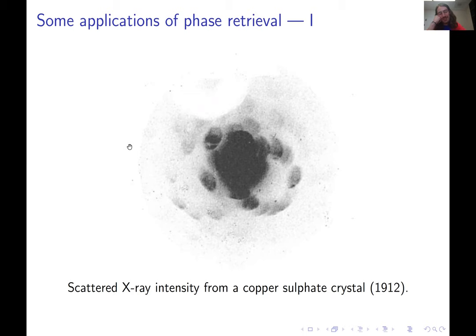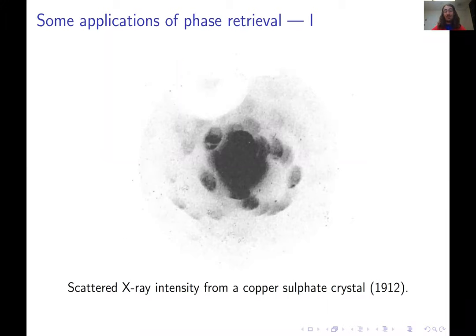This is interesting for two main reasons. The first one is this picture was taken in 1912 — more than a hundred years ago. It neatly illustrates that phase retrieval has a very long and interesting history, because this picture was taken by two lab assistants of Max von Laue. He would later win the Nobel Prize for the discovery of the diffraction of x-rays by crystals.